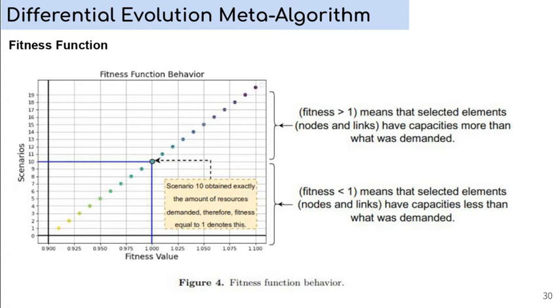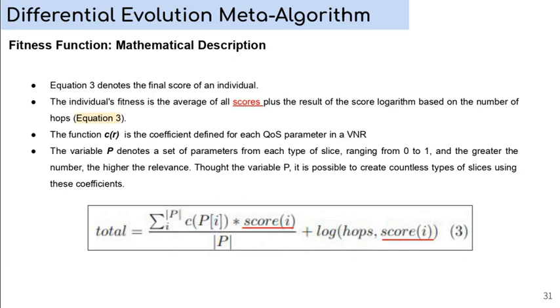In this slide, we have the mathematical description of the fitness function. Equation 3 denotes the final score of an individual. The individual's fitness is the average of all scores, plus the result of the score logarithm based on the number of hops. The function c is the coefficient defined for each QoS parameter in a VNR. The variable p denotes a set of parameters from each type of slice, ranging from 0 to 1, and the greater the number, the higher the relevance. Through the variable p, it is possible to create a countless type of slices using this coefficient.